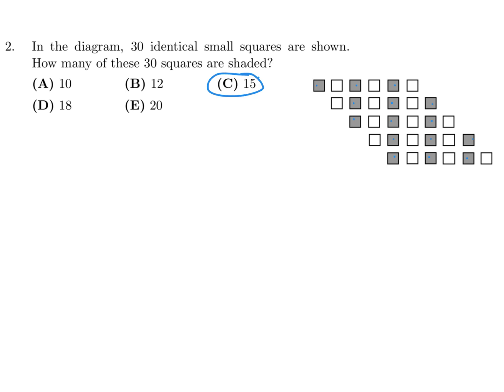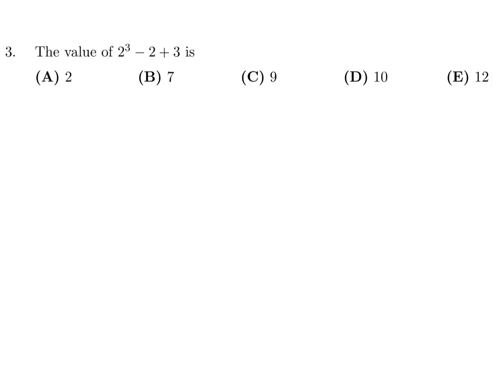The value of 2 to the power of 3 minus 2 plus 3. We've got 2 to the power of 3 which is 8, minus 2 plus 3 which is 1, so that looks like 9 to me. Number 3 answer is C.